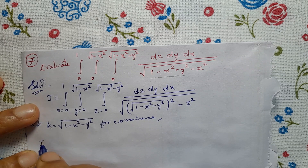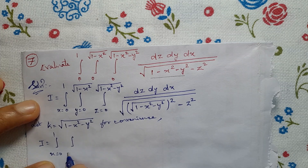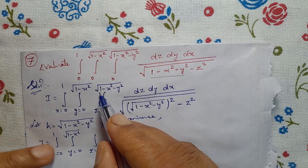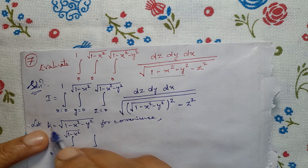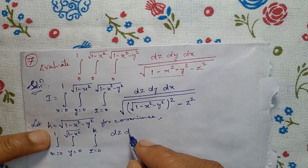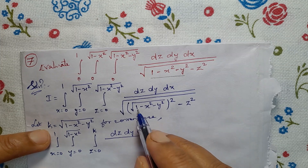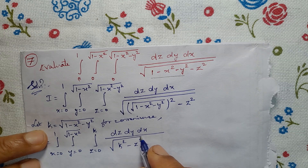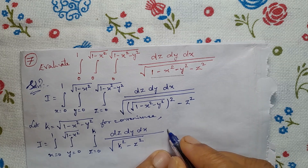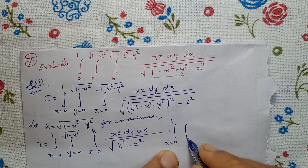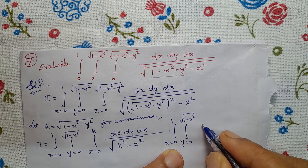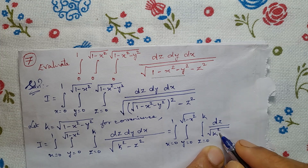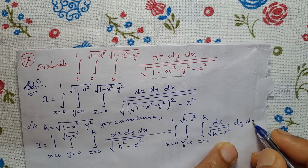Then I = integral x from 0 to 1, integral y from 0 to √(1−x²), integral z from 0 to k; since √(1−x²−y²) = k, the denominator becomes √(k²−z²). So: I = integral x=0 to 1, integral y=0 to √(1−x²), integral z=0 to k of dz divided by √(k²−z²), dy dx.